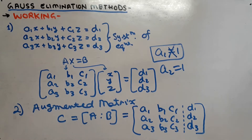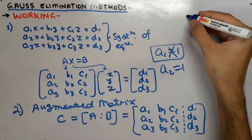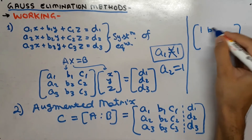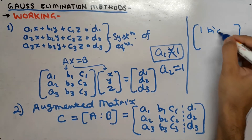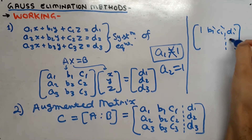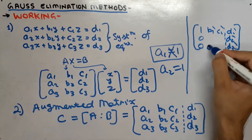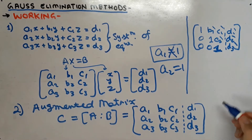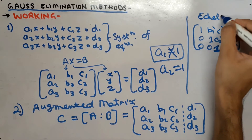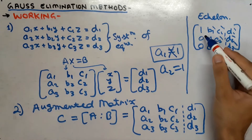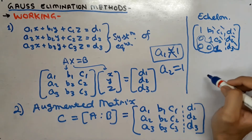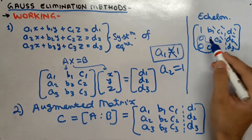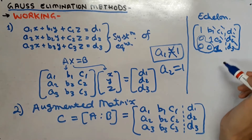Now we have to convert this augmented matrix into echelon form. In echelon form, we convert the matrix into a form where the lower triangular part of the matrix is 0, followed by 1. Beneath every 1 there should be a 0, and a 1 should be followed by every 0 in every row. This is our echelon form.